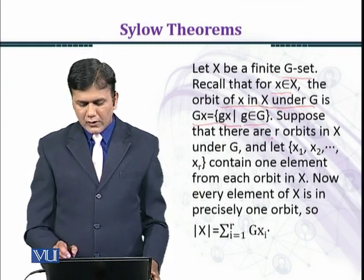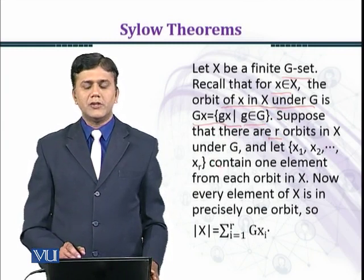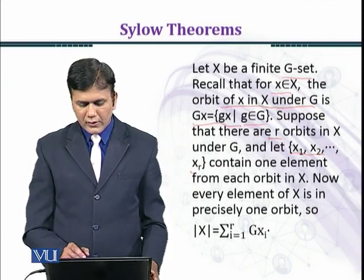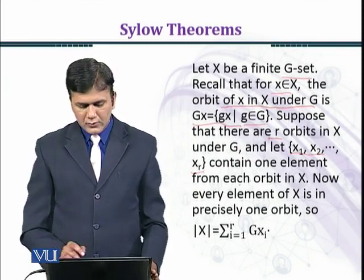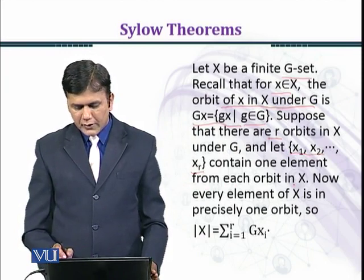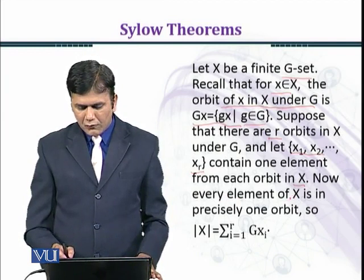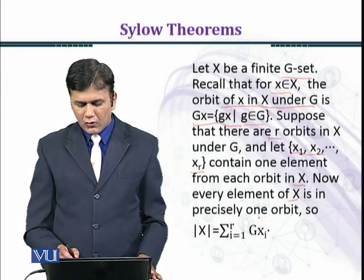Suppose that there are r orbits in X under G, and let {x₁, x₂, ..., xᵣ} contain one element from each orbit in X.